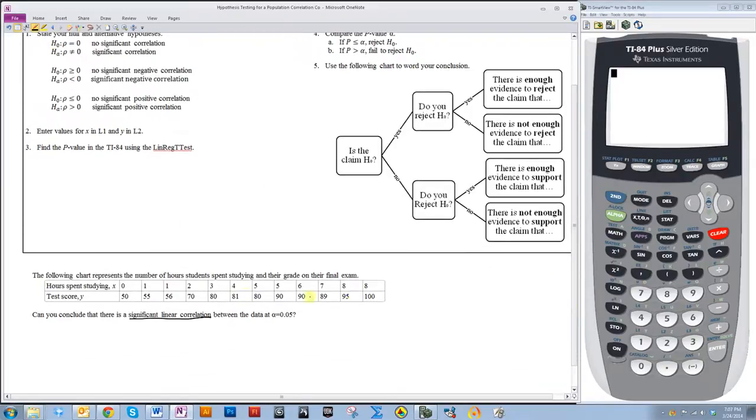The one where rho is equal to 0 and rho is not equal to 0. So, H0 is rho is equal to 0. HA is rho is not equal to 0. And the claim is going to be HA because it says that we're kind of claiming that there's a significant linear correlation. Otherwise, it would have said that there is no significant correlation.